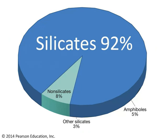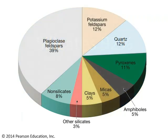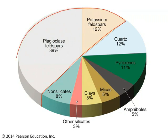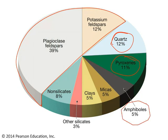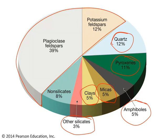Non-silicate minerals, in contrast, make up only about 8 percent of the crust. Looking at the details, about half of all minerals in the crust are feldspars of one kind or another — either plagioclase feldspar or potassium feldspar. Other important silicate minerals include quartz, pyroxenes, amphiboles, micas, clays, and a grab bag of other silicates.